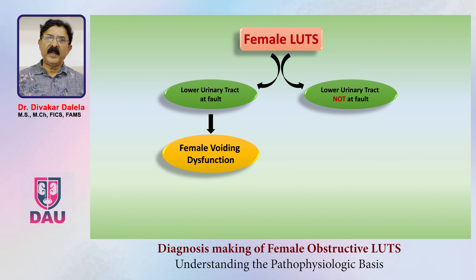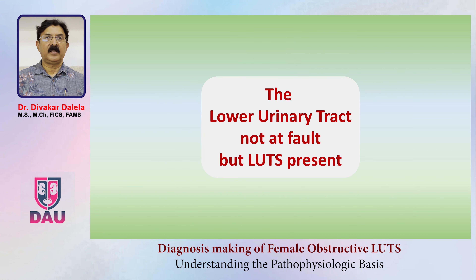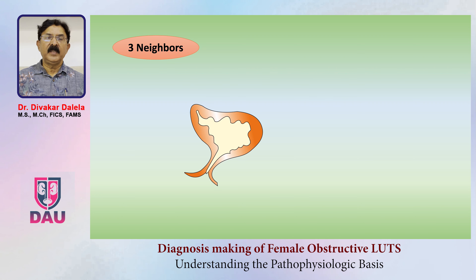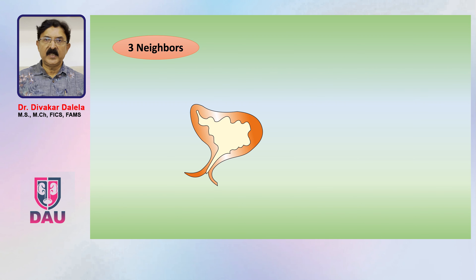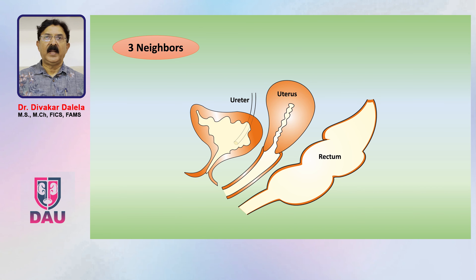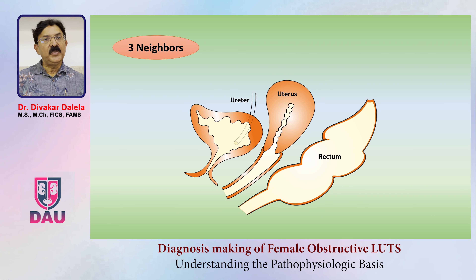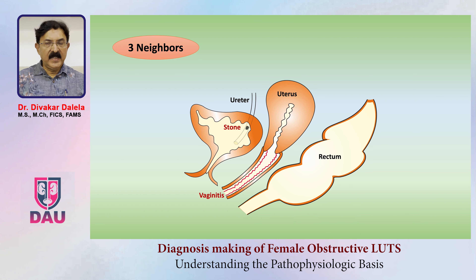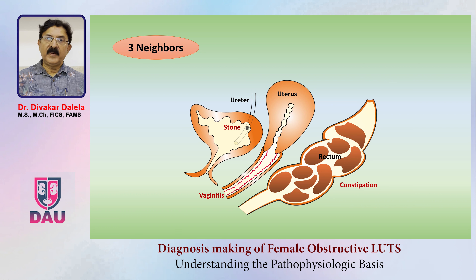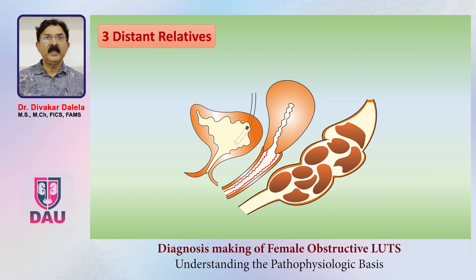Let me talk about having lower urinary tract symptoms without the lower urinary tract being at fault. You should remember three neighbors of the lower urinary tract: the lower ureter, the uterus and vagina, and the rectum. In each of them there is one common disease — in the ureter, a stone in the lower ureter; uterus, vaginitis; rectum, constipation. These three neighbors and their common ailments can present as lower urinary tract symptoms.